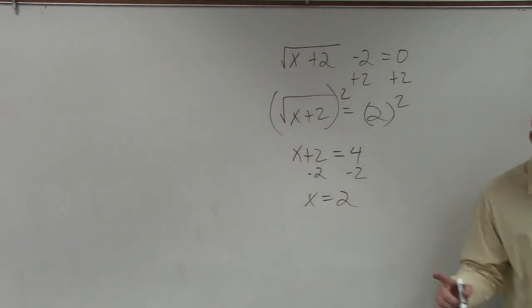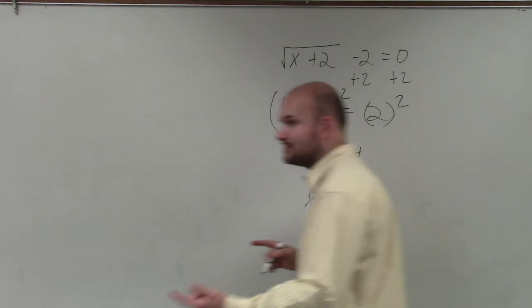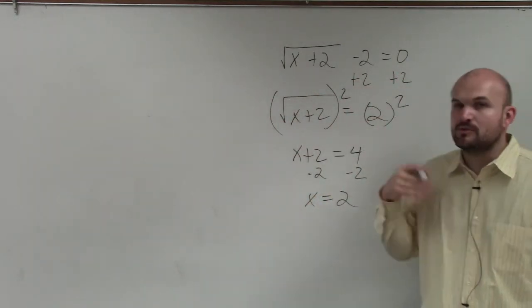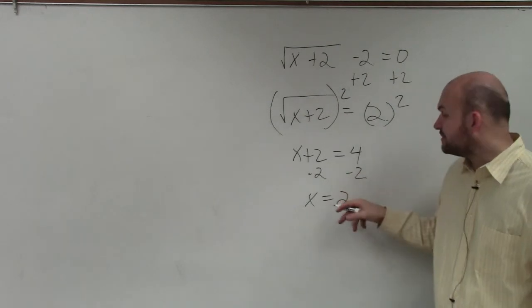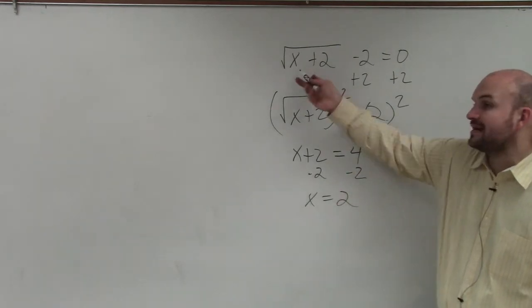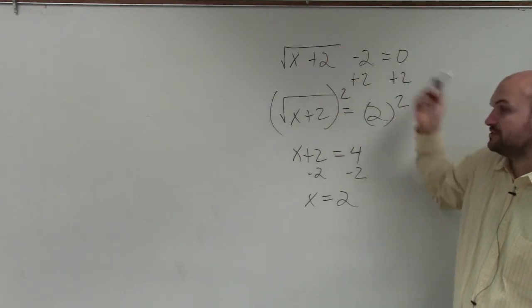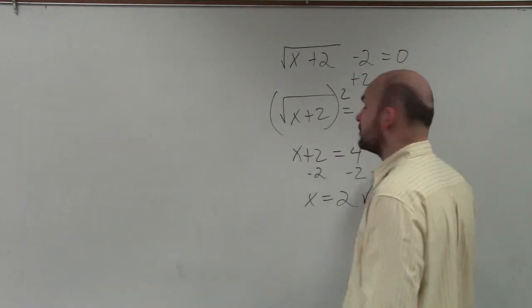Well, what I meant by that was not was your answer the same as mine, but does your answer work? Because when we're solving square roots, we always want to make sure we take our answer and plug it back in to make sure it works. 2 plus 2 is 4. Square root of 4 is 2. Minus 2 is 0. So therefore, this answer works.